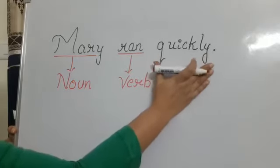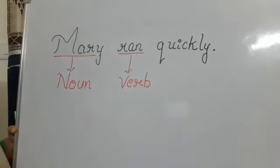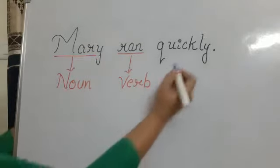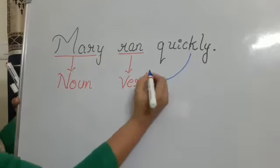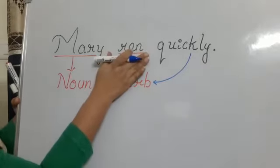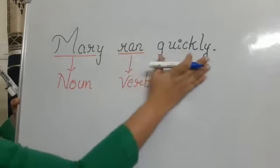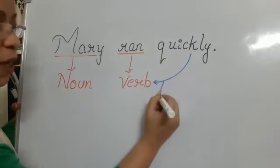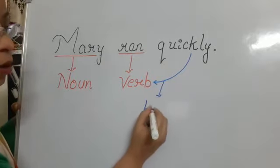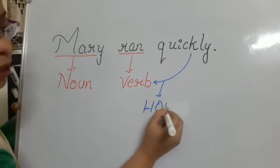And now what is it doing here in the sentence? It is describing about the verb, describing about the action. How the action has been done? It has been done quickly. So it is mentioning about how the work has been done.